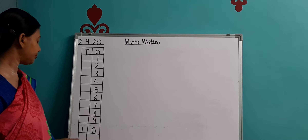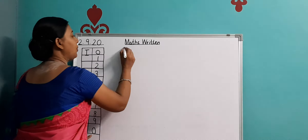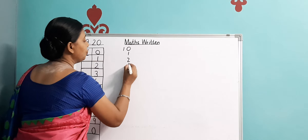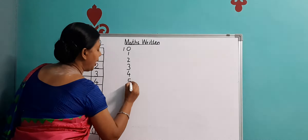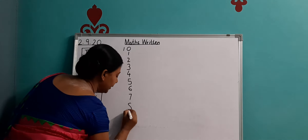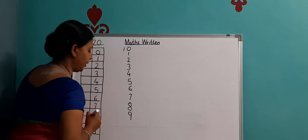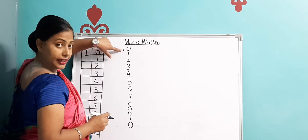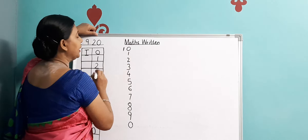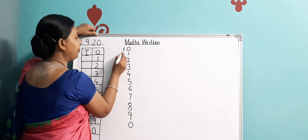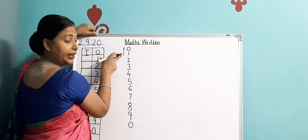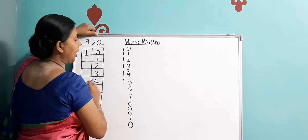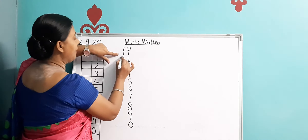Now after 10, we start again: 1, 2, 3, 4, 5, 6, 7, 8, 9 and again 0. So now 1 comes in the tens place. It has become 1, 1 — eleven. Then 1, 2 — twelve. 1, 3 — thirteen. 1, 4 — fourteen. 1, 5 — fifteen. 1, 6 — sixteen. 1, 7 — seventeen. 1, 8 — eighteen. 1, 9 — nineteen.